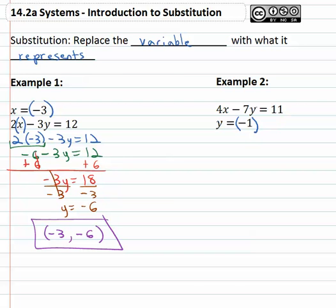Well if y is equal to negative one, we can replace the y with what it represents, the negative one. So now that equation becomes four x minus seven times negative one equals eleven.